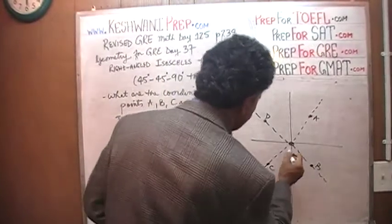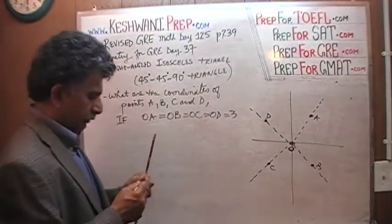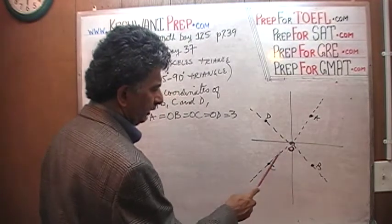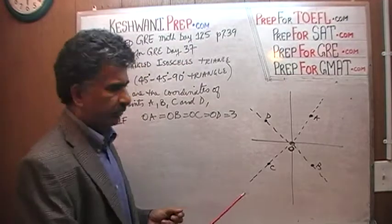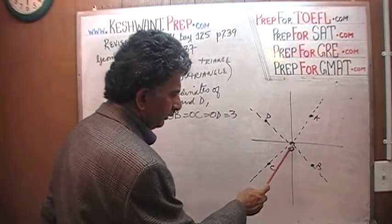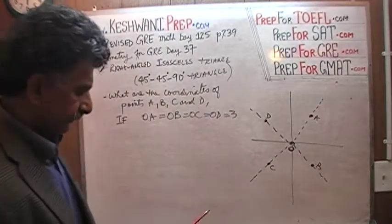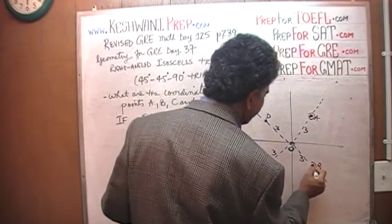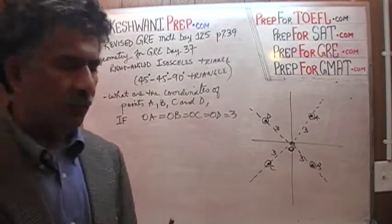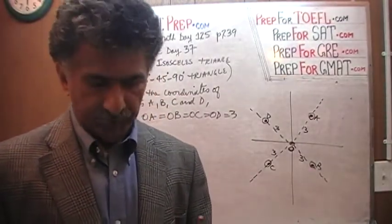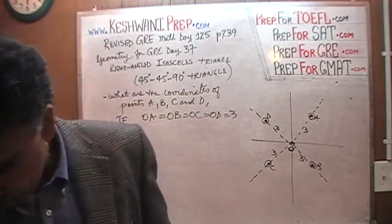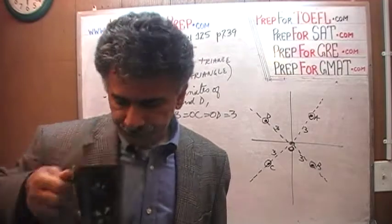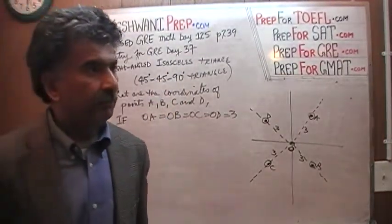We are told, O is the origin. This is the point O, the origin. The distance from O to A equals the distance from O to B, which equals O to C, which in turn equals O to D, which we are told equals 3. The length of O to A, O to B, O to C, and O to D, they all equal 3. The question is, what are the coordinates of these points? What I want you to do now is to pause the video, solve it, find out the coordinates of these points and then resume the video.